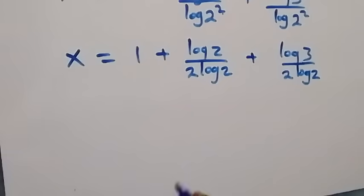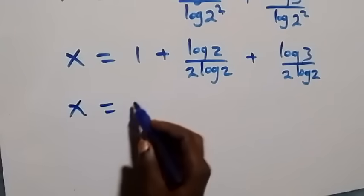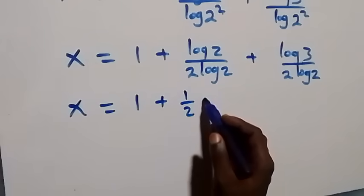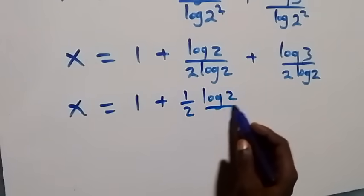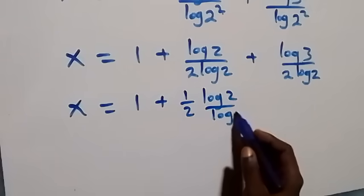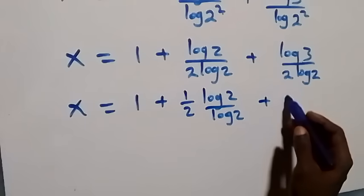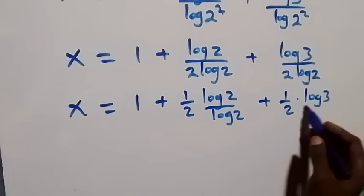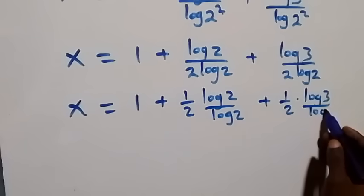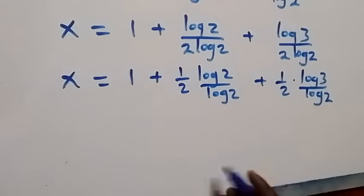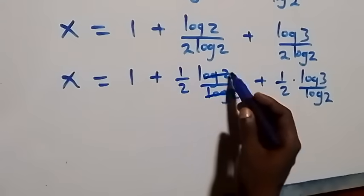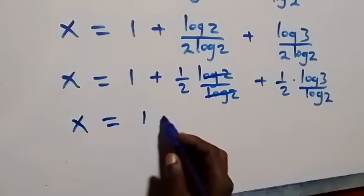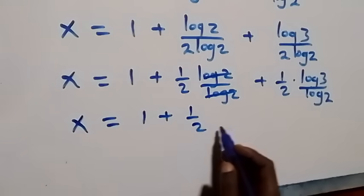This is the same as x equals 1 plus one-half times log 2 over log 2, plus one-half times log 3 over log 2. Since log 2 over log 2 cancels to 1, we get x equals 1 plus one-half, plus one-half times log 3 over log 2.